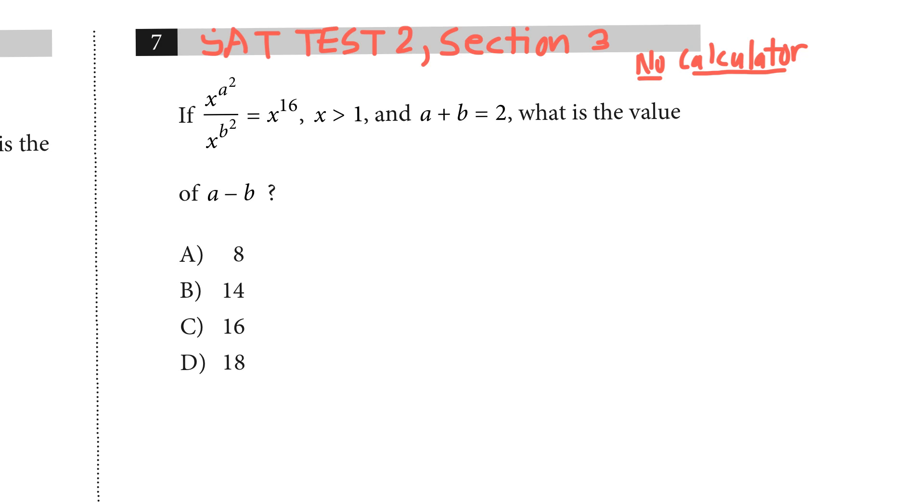Okay, we have SAT test number 2, section 3, a no calculator section. It looks like we have something here with x to the a squared divided by x raised to the b squared equals x to the 16th power. In this problem it says x is greater than 1, and we also know that a plus b is equal to 2, so we'll probably have to use this here somewhere.